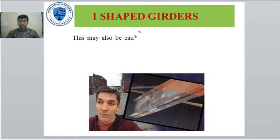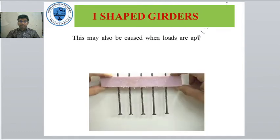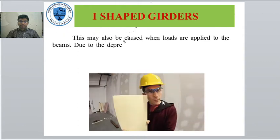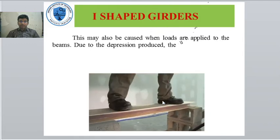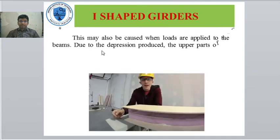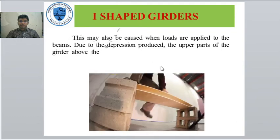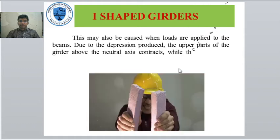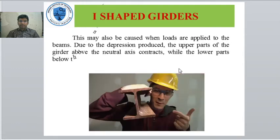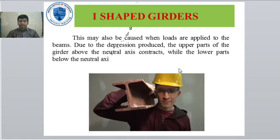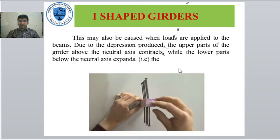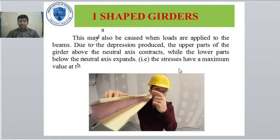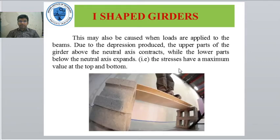Look at the image. Normal material has the ability of increasing its stamina by changing the shape, like I-shaped girders. This may also be caused when loads are applied to the beams. Due to the depression produced, the upper parts of the girder above the neutral axis contract, while the lower parts below the neutral axis expand. Thus, the stresses have a maximum value at the top and bottom.